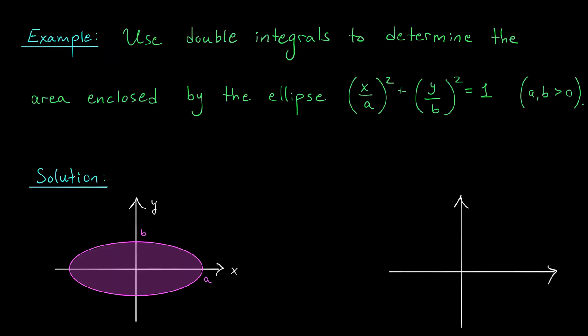As an example, I'd like to use double integrals to compute the area enclosed by an ellipse. Here, the ellipse is arbitrary. (x/a)² + (y/b)² = 1. a and b are just some positive constants. So maybe the picture you have in mind is something like this. Here's my ellipse, and I'm looking for the area inside.